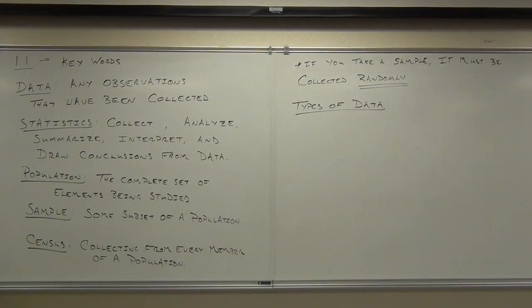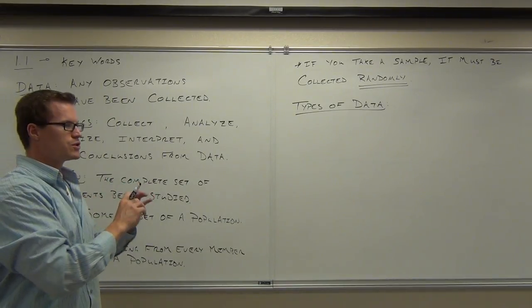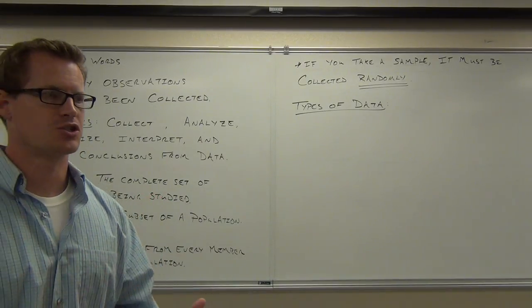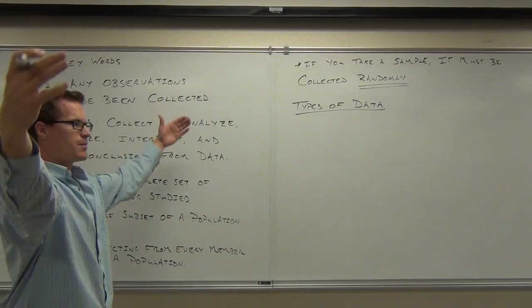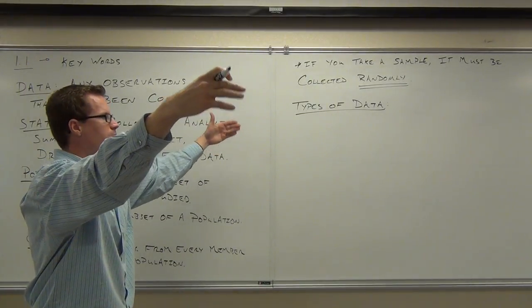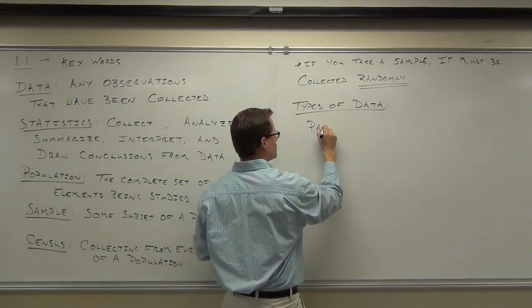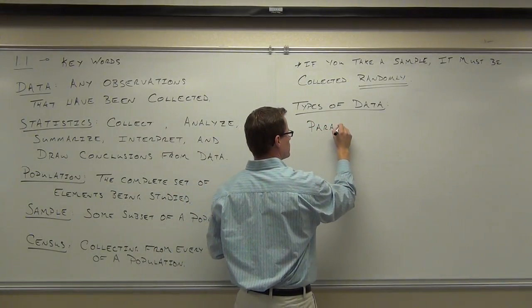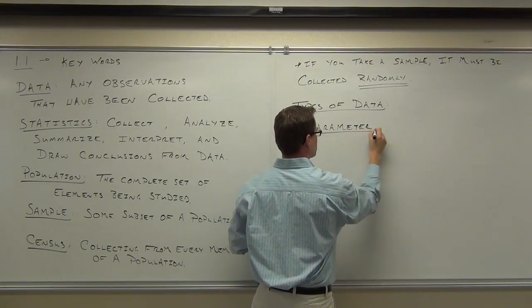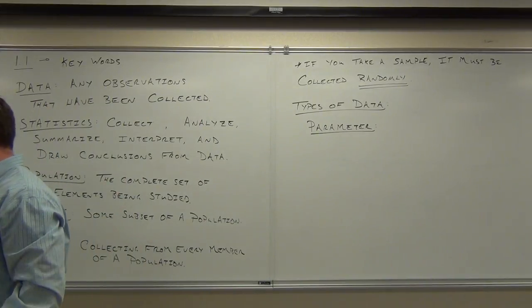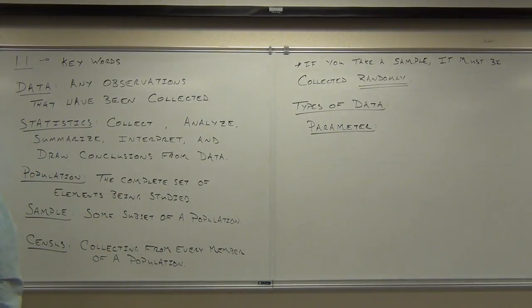If you're talking about characteristics, we use a different word when we're talking about populations and when we're talking about samples. If you're talking about characteristics of a population, so all the people in the population, this is what we're applying to them, that's called a parameter. So when I say the word parameter, what we're talking about is a characteristic of a population.